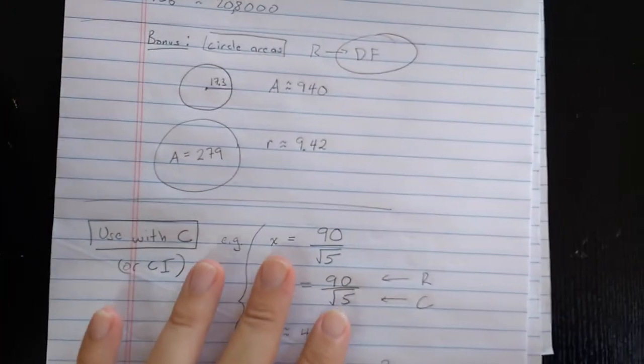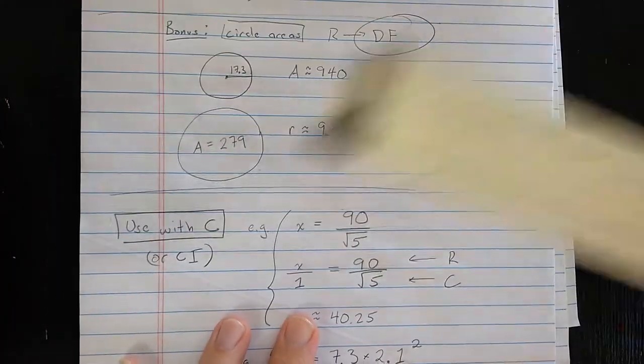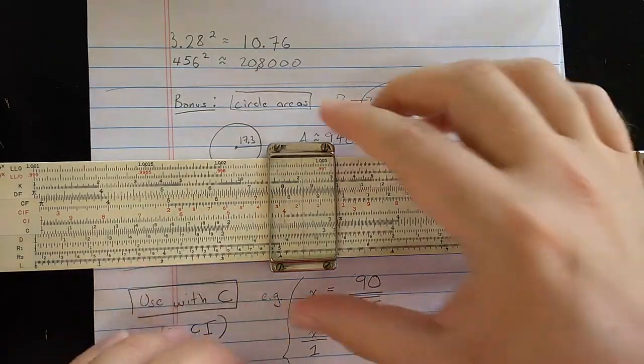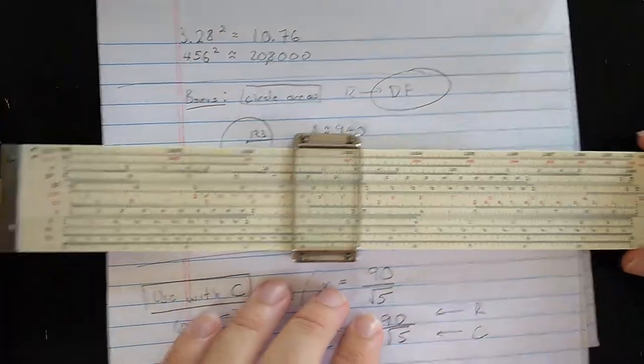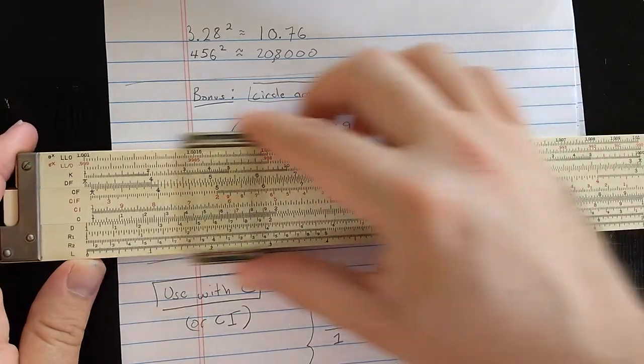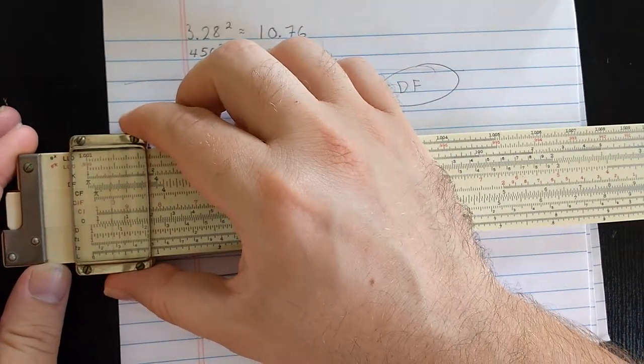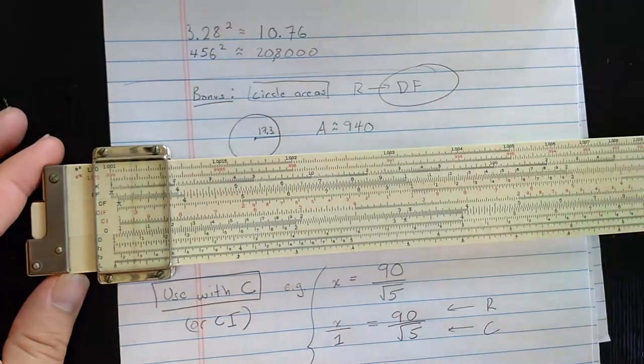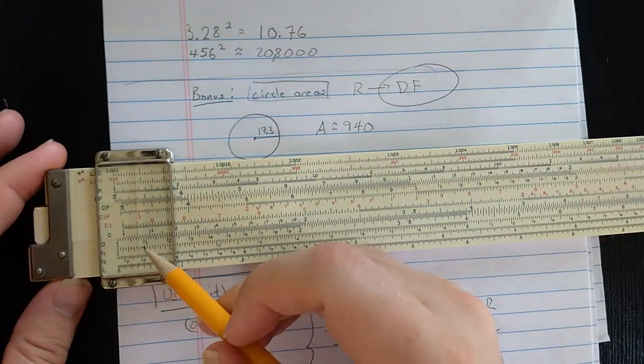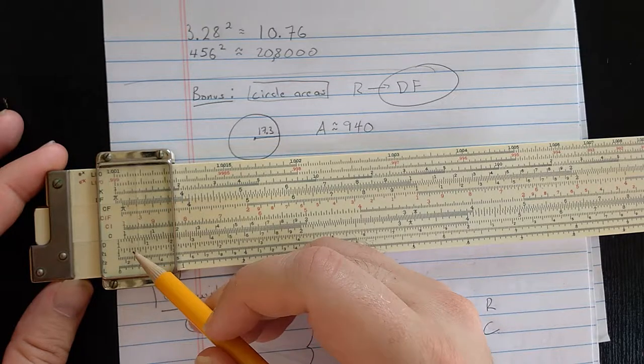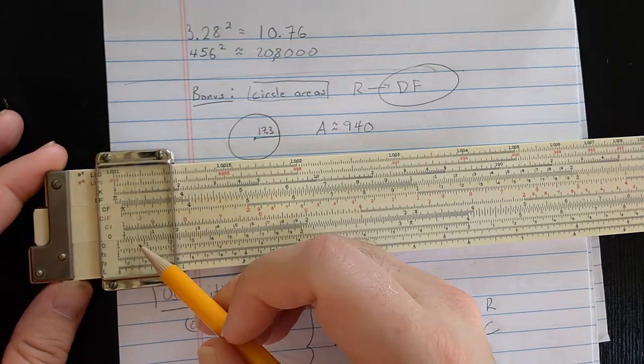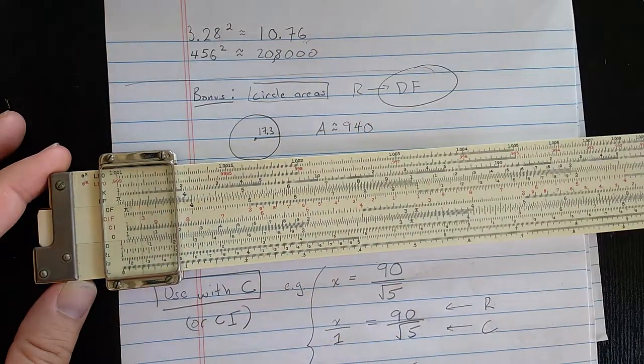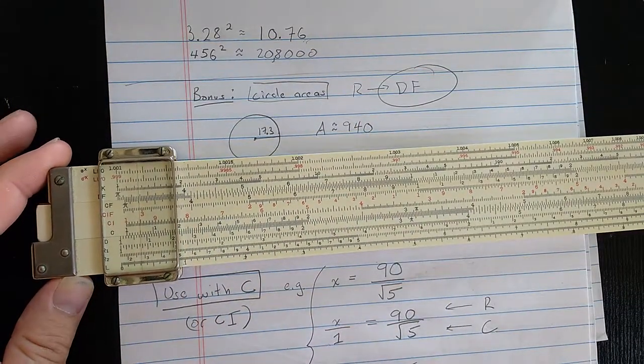Now, of course, using the scale in reverse, you can square things. So if I was to find 3.28, that's going to be on R2 near the beginning. So here's 3.2, 3.28 should be there. Then on D, I read the square. So it looks like 1, 0, 7, and it looks like a little bit more than 7, 5, so I put that at 7, 6 before. You can see that's very high resolution.